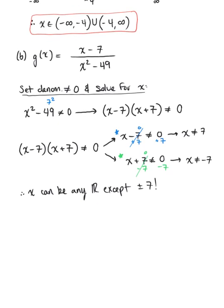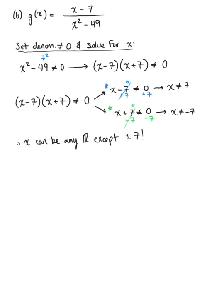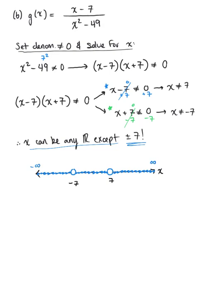Let's think about the number line. We have a number line and we want to think about the points negative 7 and positive 7. X can be any real number except for these two values, so we take our hole punch and remove those two points. We can see x could be anything less than negative 7, anything in between negative 7 and positive 7, or anything greater than positive 7. We can see we have three intervals here.